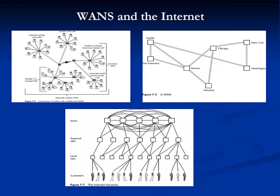The largest WAN is the Internet. To connect users from around the globe, the Internet relies on a hierarchical structure of connection points. At the bottom of the Internet hierarchy are local Internet service providers, or ISPs. Local ISPs connect to regional ISPs, which form the next layer in the hierarchy. Regional ISPs connect to the national network service providers via network access points, or NAPs. NAPs are where the largest network service providers aggregate and exchange Internet traffic.